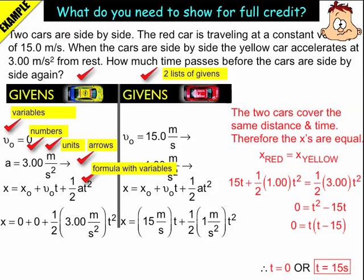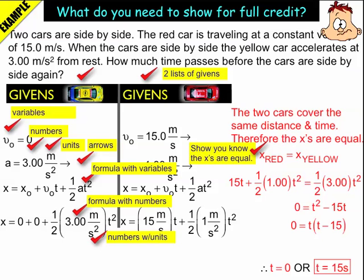I'm looking for a formula with only variables. In this case, x equals x naught plus v naught t plus 1/2 a t squared. I'm looking for the formula with numbers and the formula with units. And then I also want to see this expression, something that indicates that these two objects travel the same distance. In this case, x subscript red equals x subscript yellow.